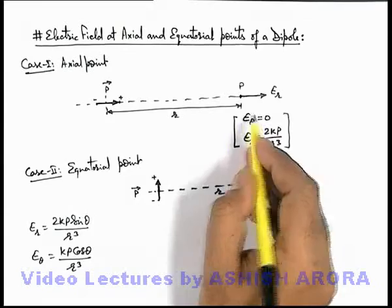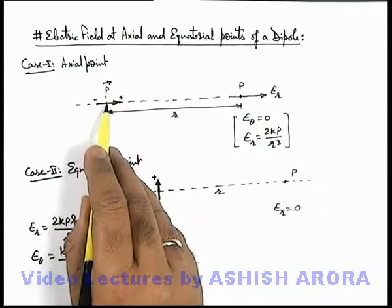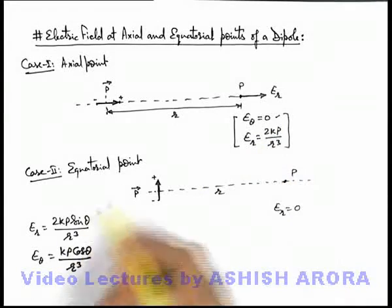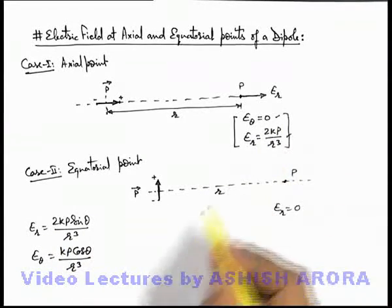So in the above expression when we are calculating axial point, you can see here theta is 90 degrees, so E_theta becomes zero and E_r becomes 2kp by r³.